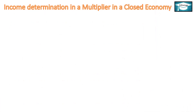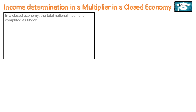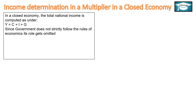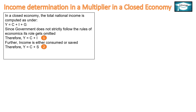Income Determination in a Closed Economy: In a Closed Economy, the Total National Income is computed as Total Income equals Total Consumption plus Total Investment plus Government Expenditure. Since Government does not strictly follow the rules of economics, its role gets omitted. Therefore, in a Closed Economy, Y equals C plus I. Further, income is either consumed or saved, therefore Y equals C plus S. From these two equations we get I equals S.